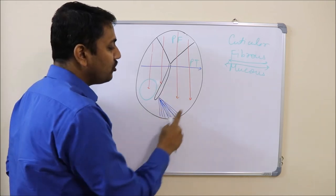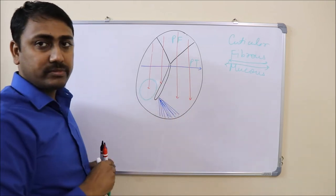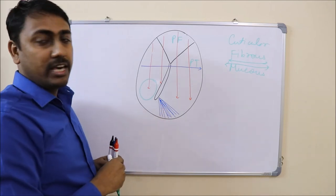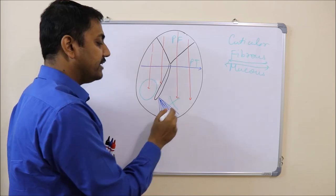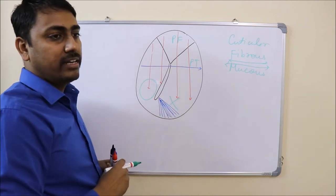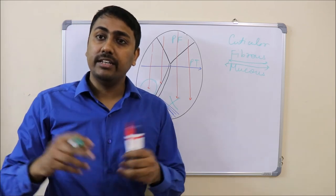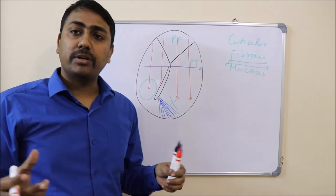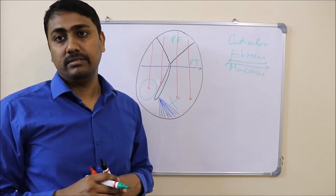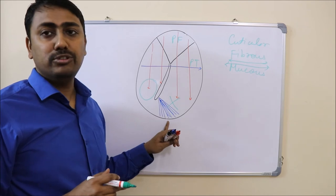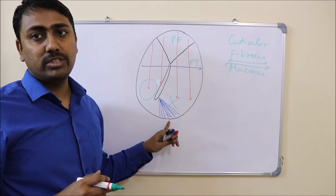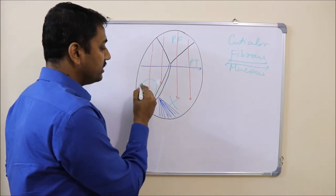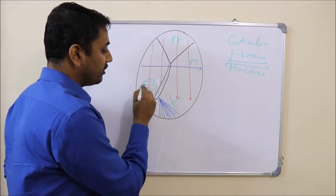What about the antero-inferior quadrant? In the antero-inferior quadrant we have seen the presence of the cone of light. If we do any surgical incision here, it will disturb the cone of light and we will not be able to diagnose any future pathologies of the middle ear. So this quadrant is also not used for surgical incision, because it will hinder the cone of light. What remains is the postero-inferior quadrant.